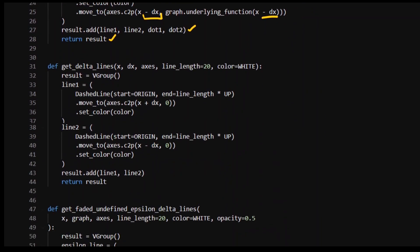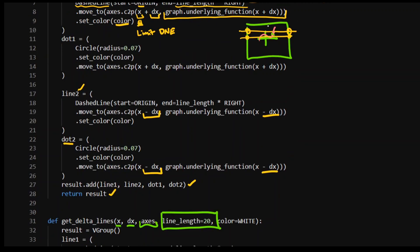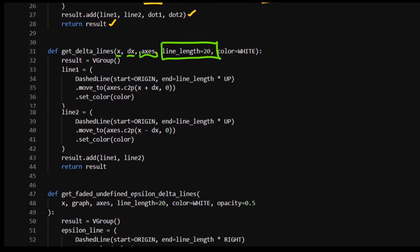Then we want to get our delta lines. Very similar thing. Takes in an x-point, dx value on an axis, and it's got a length of 20. I want to have vertical line, vertical line, about that particular point, which is normally the point where the limit does not exist. Similar thing. It's a dashed line.